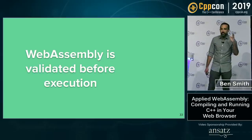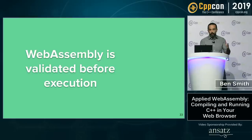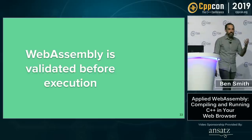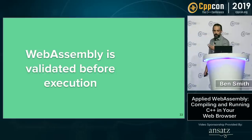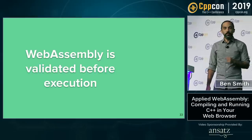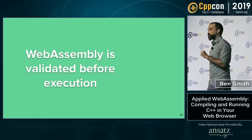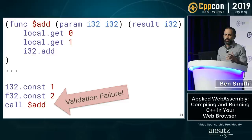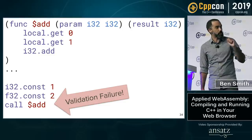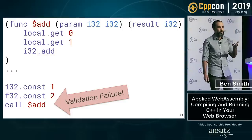Another thing about WebAssembly is that it is validated before execution. A lot of CPUs don't do this, but because it's statically typed, we can actually validate the entire binary. This is necessary because we need to take untrusted code from the web and run it in the browser safely. We also bounds-check all memory accesses to prevent reading outside of bounds. For example, if we try to call a function with an f32 value instead of an i32, we get a validation error — it's basically like a compile failure, but running on the client side.